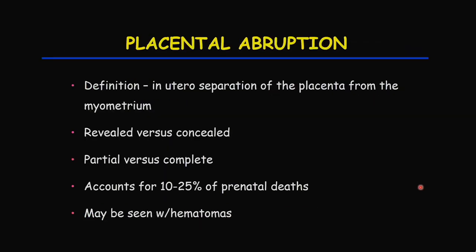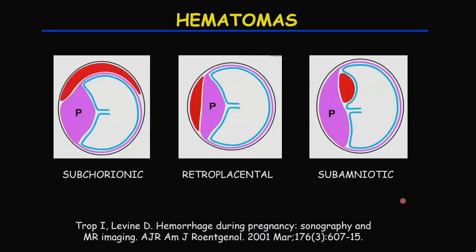When a patient is pregnant, we need to be aware of placental abruption, defined as in utero separation of the placenta from the myometrium. Placental abruption may be revealed versus concealed, and partial versus complete. We need to recognize that this can account for 10 to 25% of prenatal deaths, and it may be seen with hematomas. A beautiful demonstration from AJR shows the location where hematomas occur.